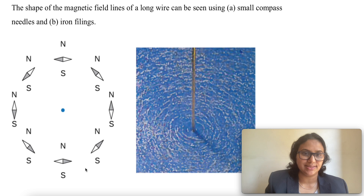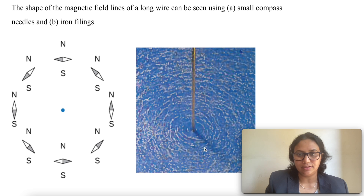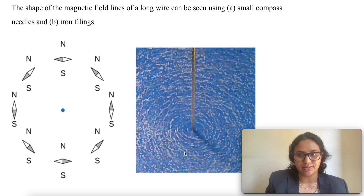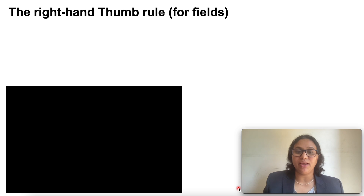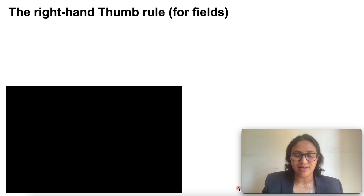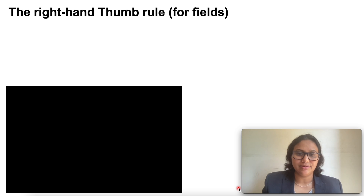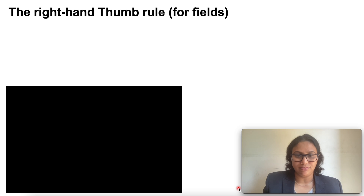This diagram represents the deflection of needles around the current carrying conductor. The straight conductor has concentric circles indicating the magnetic field lines. A convenient way of finding the direction of the magnetic field associated with a current carrying conductor is given by the right hand thumb rule.